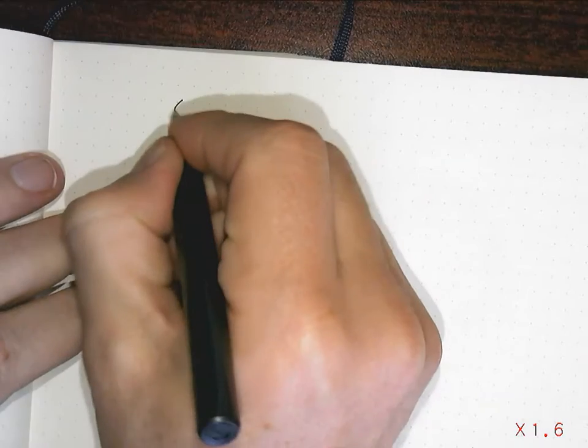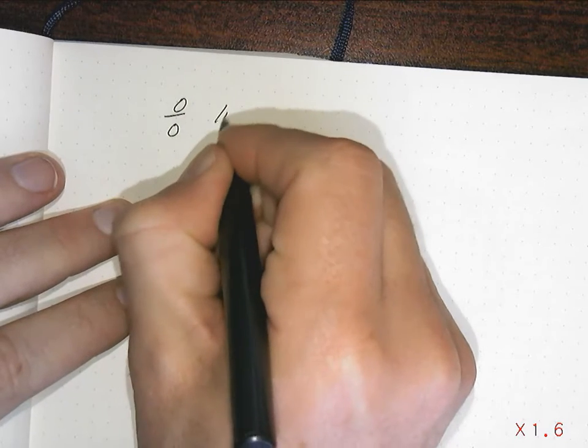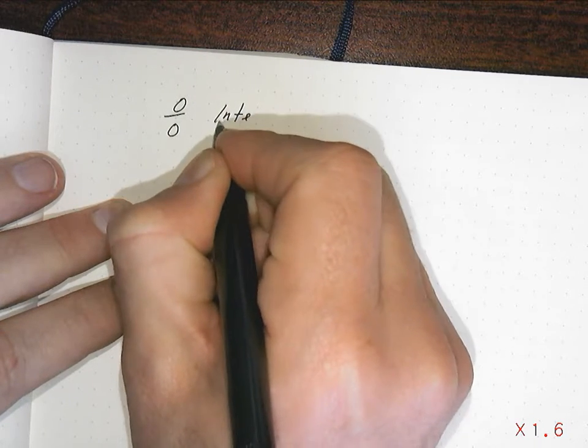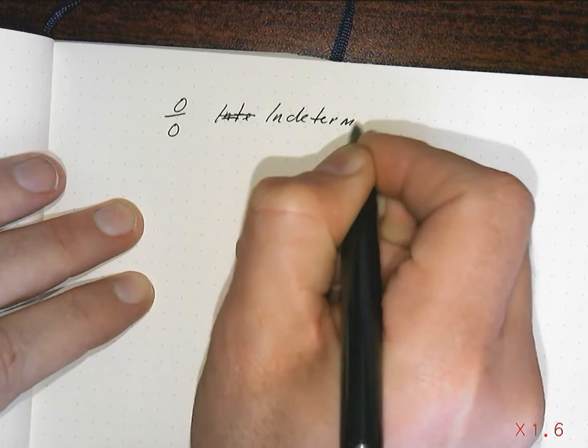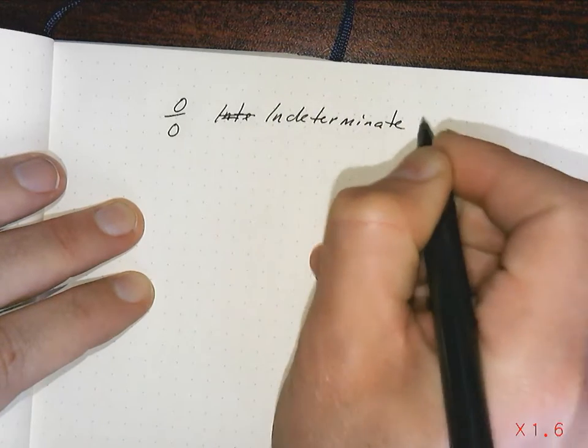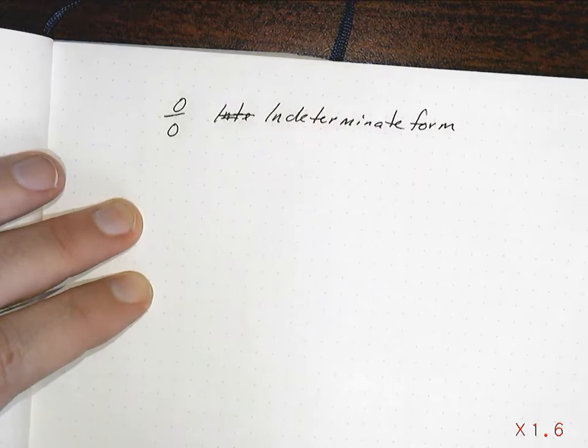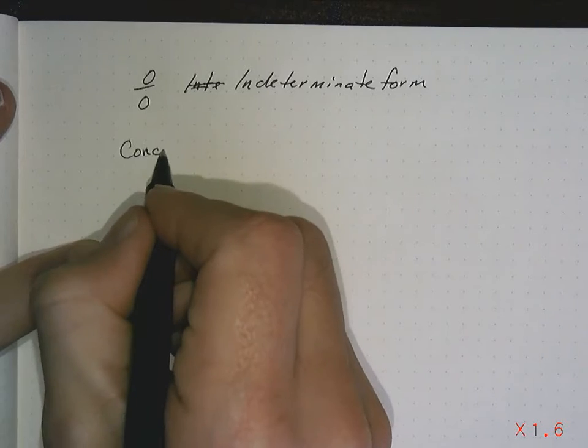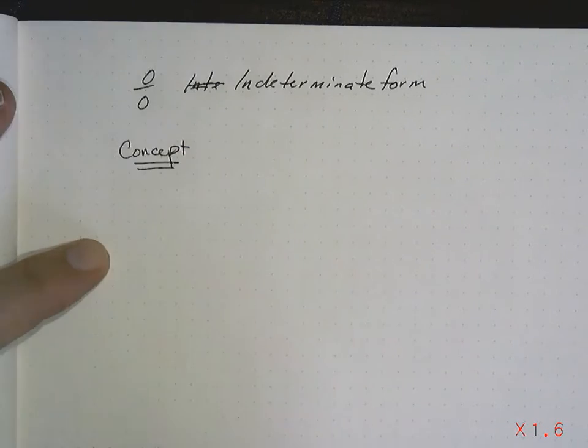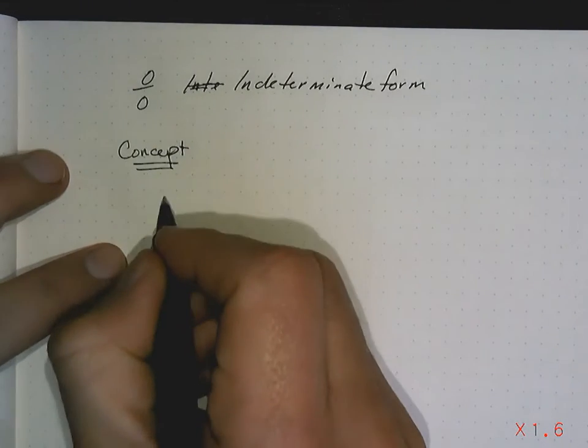Okay, ladies and gentlemen, so we left off talking about 0 over 0, and it is the indeterminate form. We're going to spend a lot of time talking about this. So here's the concept. I got two ideas for the concept. Here's the first one.